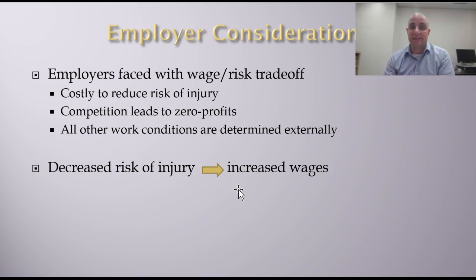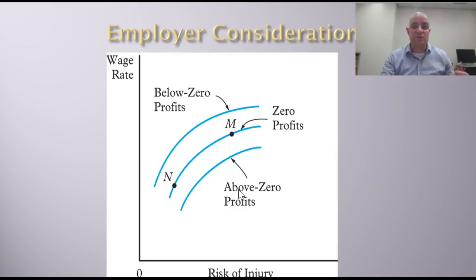We're assuming perfect competition, where all firms are competing against each other and we're making that assumption of zero economic profits. We also assume all other work conditions are determined externally. In general, as you decrease the risk of injury, it's going to lead to increased wages. Reducing the risk of injury leads to increased wages. A firm that responds to safety less has to be more competitive.